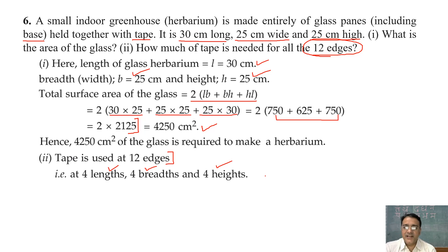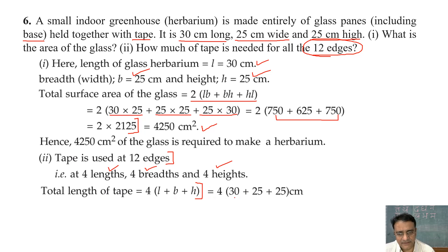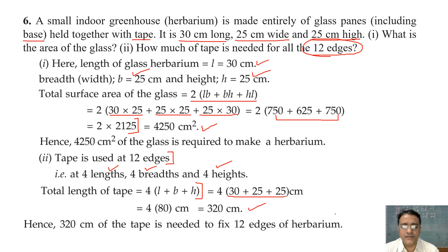Total length of tape used at 12 edges = 4L + 4B + 4H = 4(L + B + H) = 4(30 + 25 + 25) = 4 × 80 = 320 cm. Hence 320 cm of tape is needed to fix the 12 edges of the herbarium.